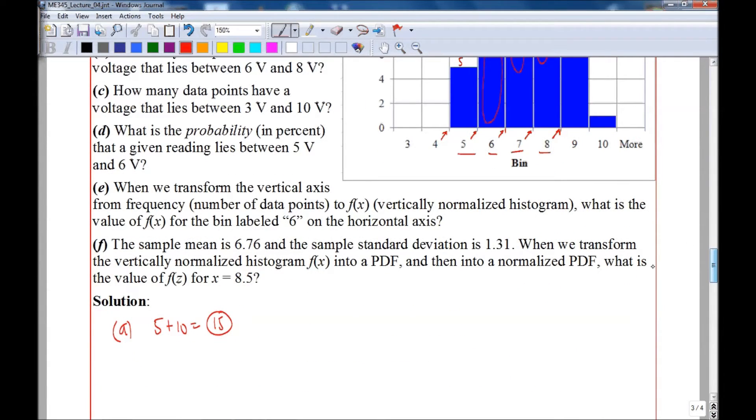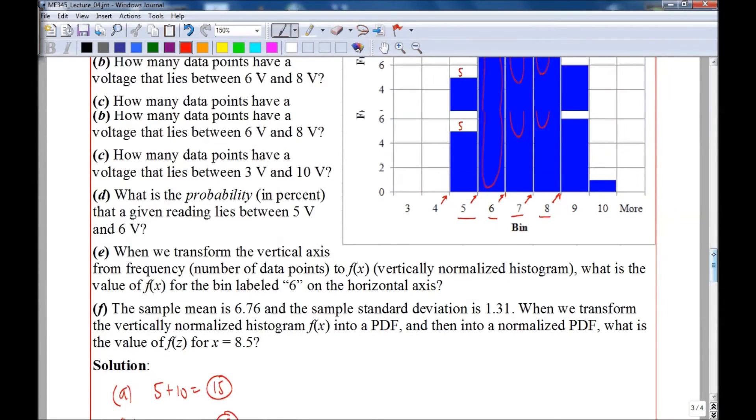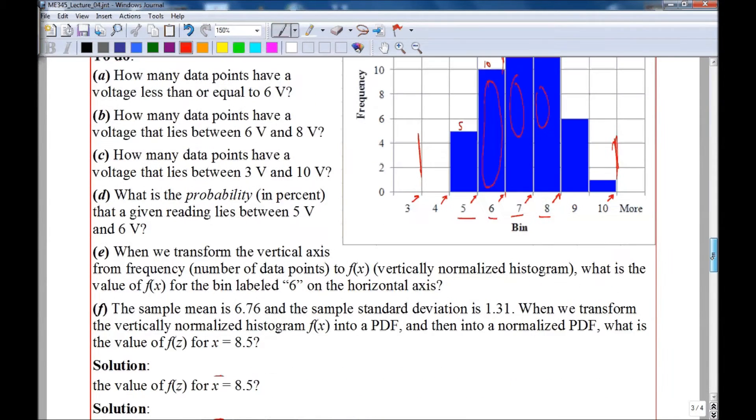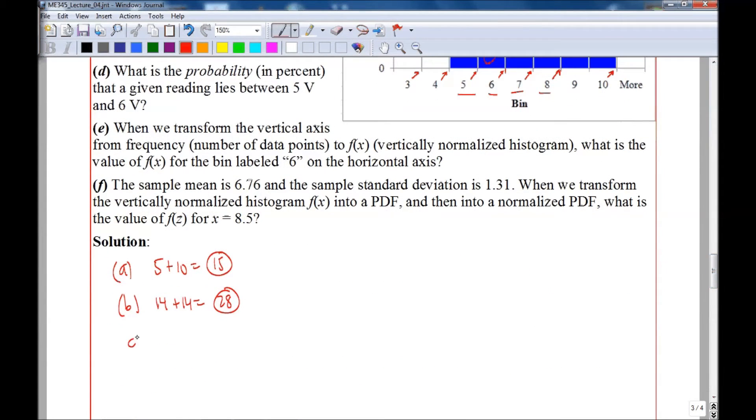Part C: How many data points have a voltage that lies between three volts and ten volts? Three volts is here, ten volts is here, so basically it's everything that has a bar—in other words all the data. You can add all these up and get 50, or we look at the fact that we had 50 voltage measurements to begin with, so part C: all of them, in other words 50 data points.